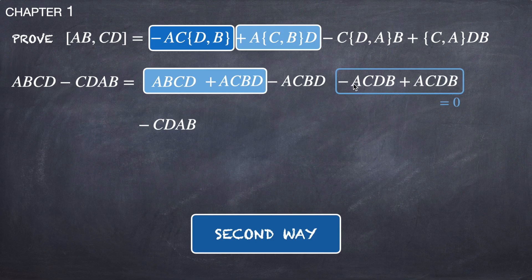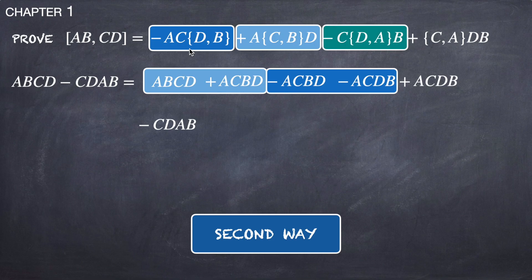And if we consider these two terms, it is exactly this term in dark blue. Now this term in green, you do have here minus CDAB minus C{D,A}B.